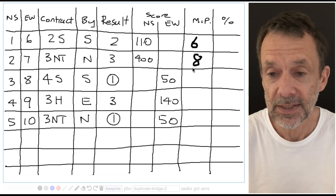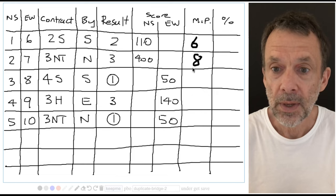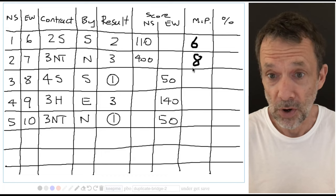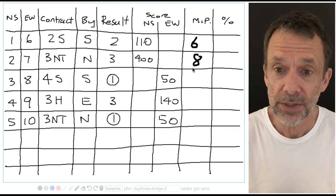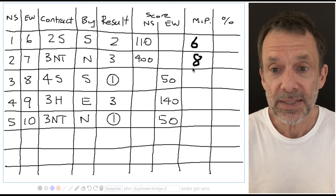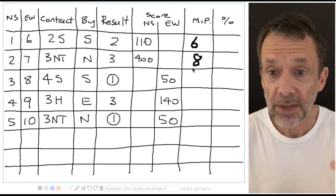Pair three, north-south were minus 50. 50 to east-west is minus 50 to north-south. Is minus 50 better than plus 110? Well, obviously not. So nothing there. Is minus 50 better than plus 400? No. Is minus 50 better than minus 140? Well, yes it is.